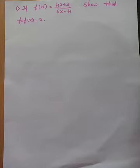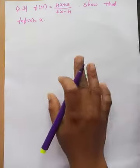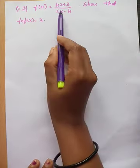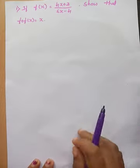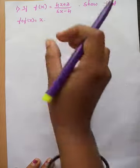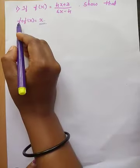Welcome back students. Today we'll discuss one more problem related to the composition of functions. Earlier, we used to be given functions with their domain and co-domain and check whether a particular composition was possible or not. Today we have a slightly different problem: if f(x) = (4x + 3)/(6x - 4), we have to show that f∘f(x) = x. We have to prove this by composing f with itself.